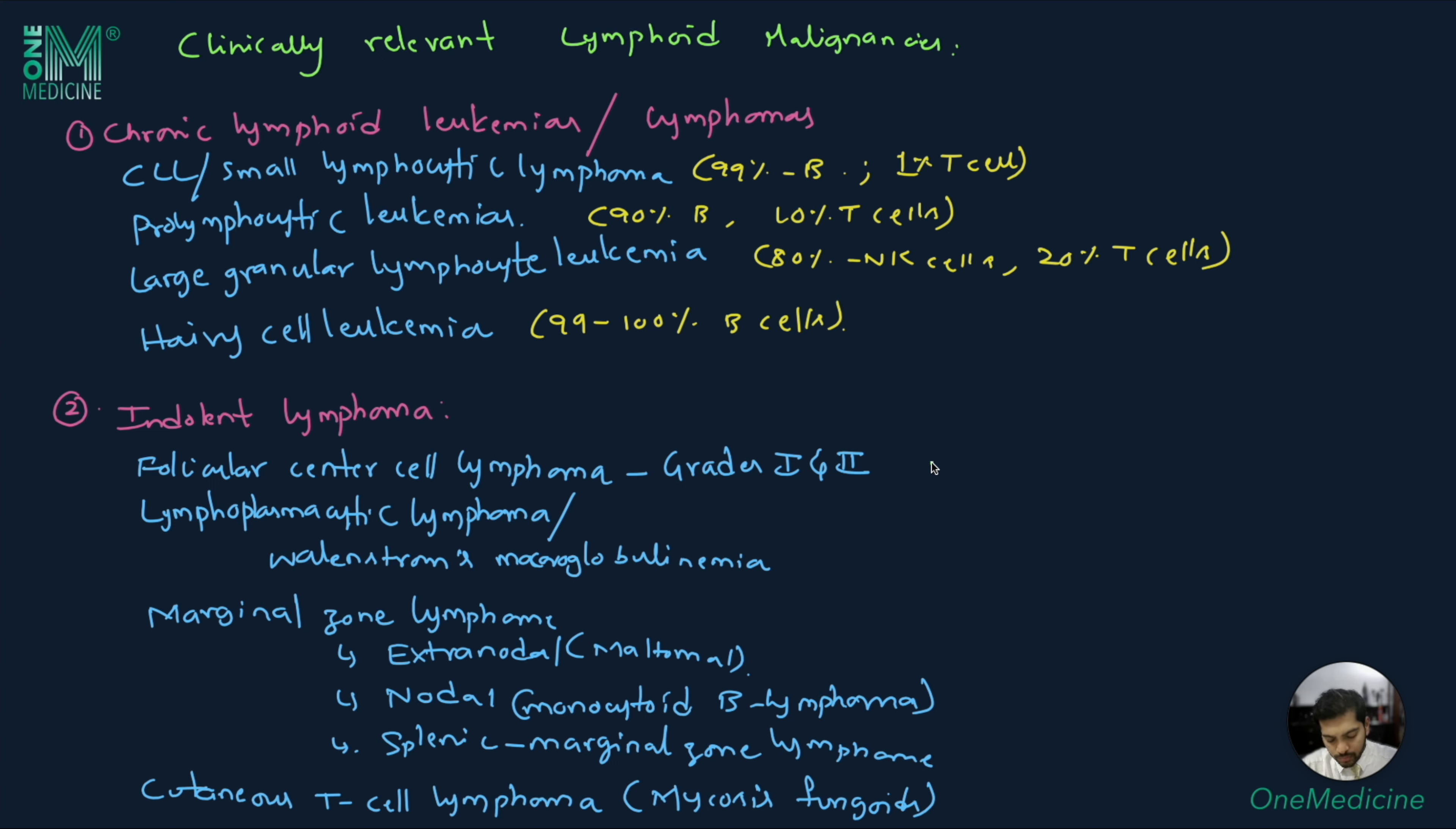Let us look at the percentage cell of origin. For follicular center cell lymphoma, lymphoplasmocytic lymphoma, and marginal zone lymphoma, all are 100% B cell origin. Whereas cutaneous T cell lymphoma is 100% T cell origin.